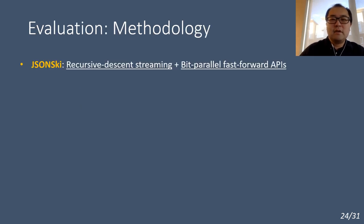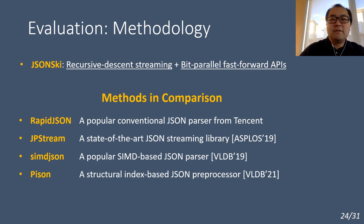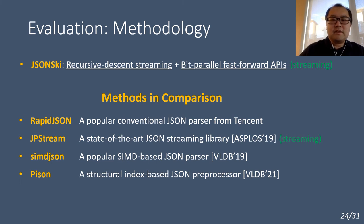Putting them together, we prototyped a JSON streaming framework called JSON-Ski. To evaluate its performance, we compared it with several state-of-the-art JSON processing tools, including RapidJSON, a JSON parser from Tencent; JPStream, the existing JSON streaming framework; SIMD JSON, a popular SIMD-based JSON parser; and PISON, an indexing-based JSON preprocessor. Among them, JPStream and JSON-Ski follow the streaming strategy, while the other methods follow the preprocessing-based strategy.